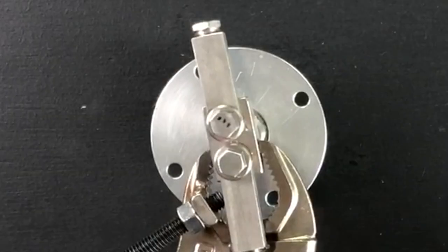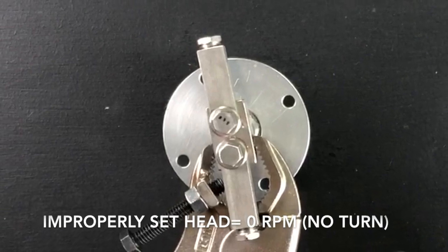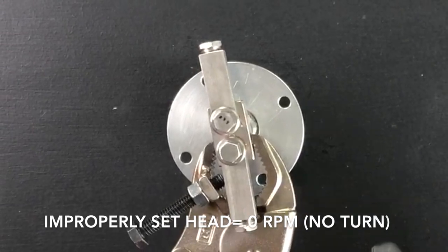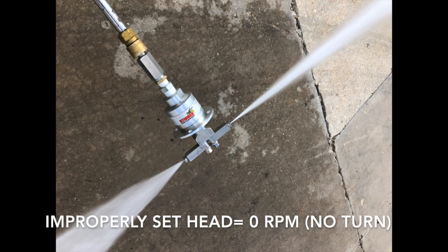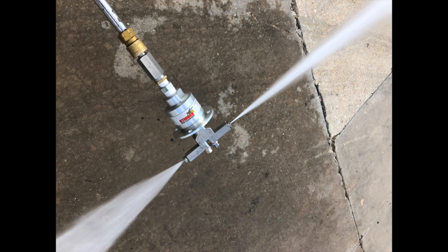Setting proper head speed to maximize cleaning efficiency is essential. Here we will show you a couple of examples of improperly set heads, then move on to show you a properly set head at our recommended factory setting of 300 RPM. When a wash arm does not have enough offset pitch to create the head to spin, a zero turn is the end result. This equals zero cleaning efficiency.